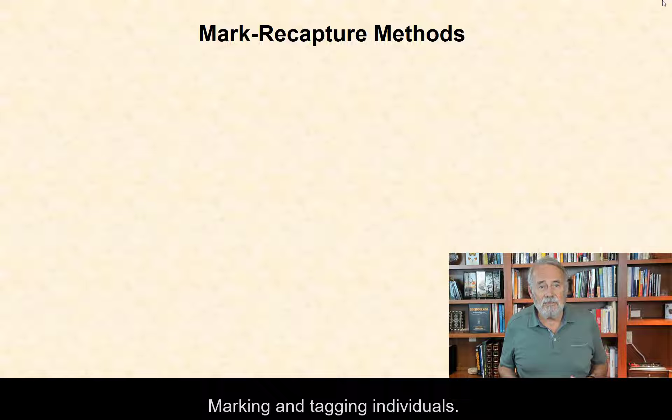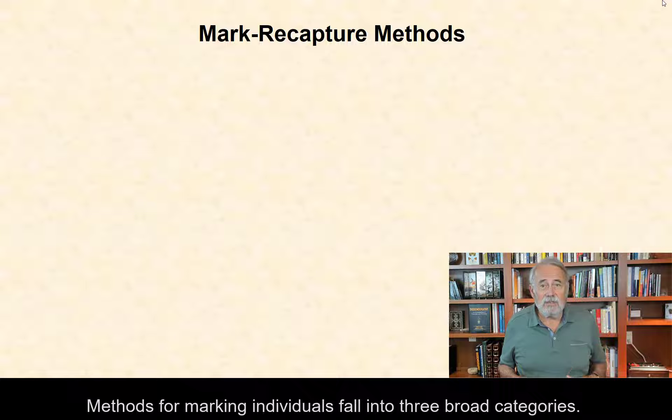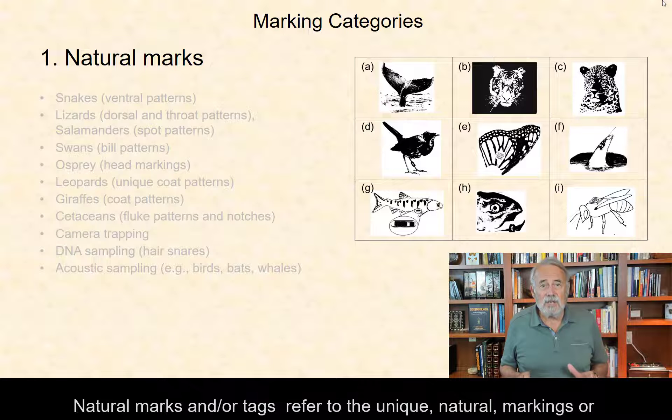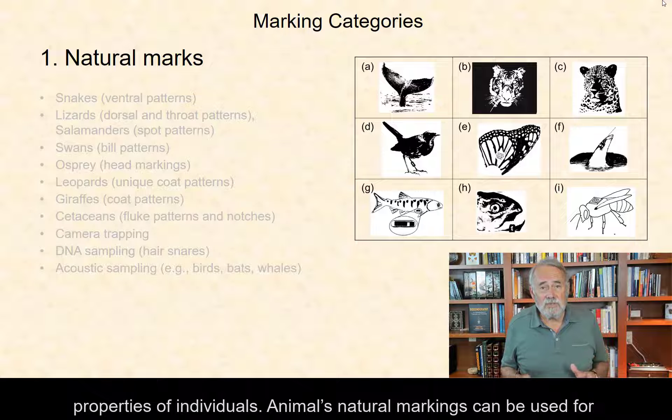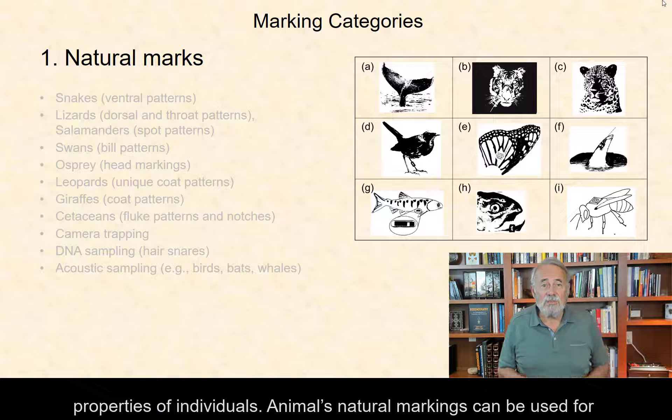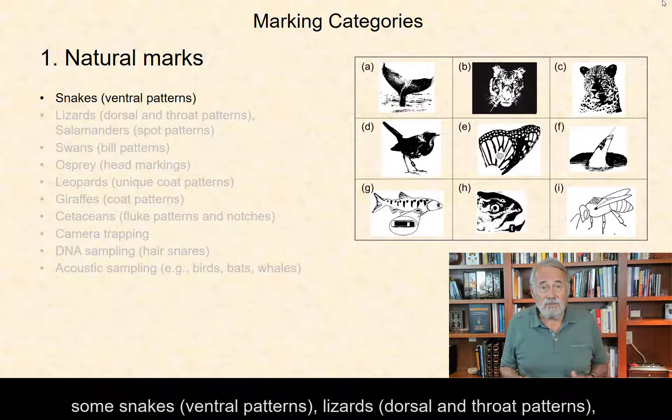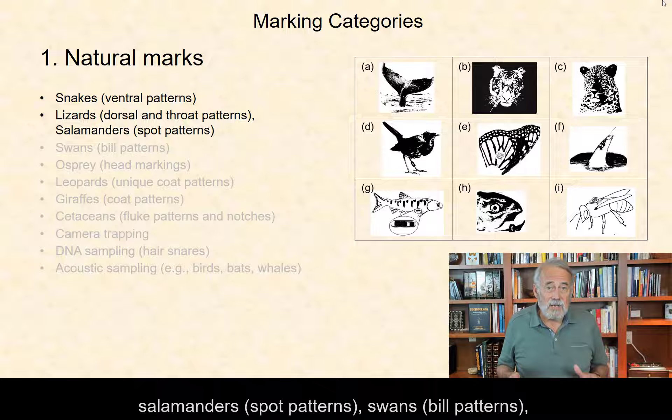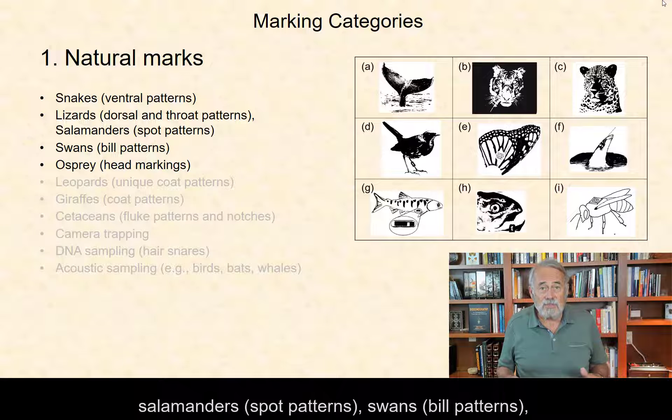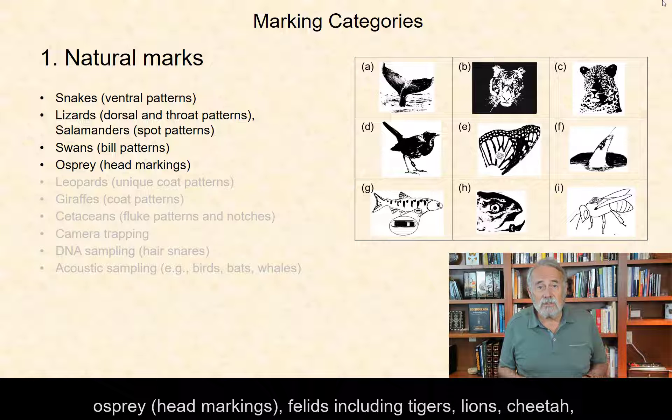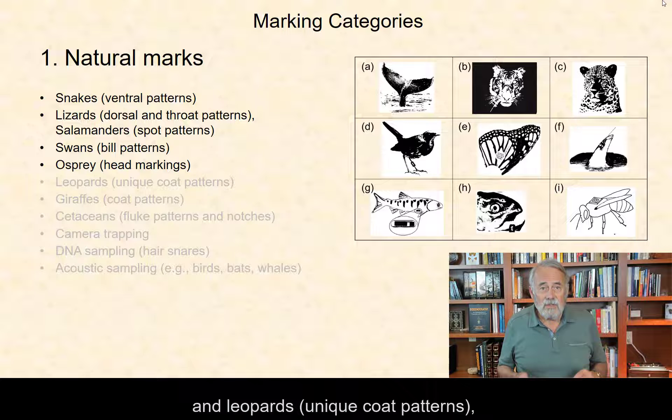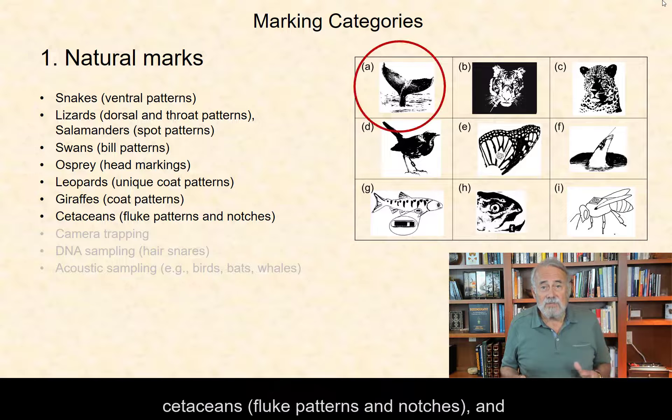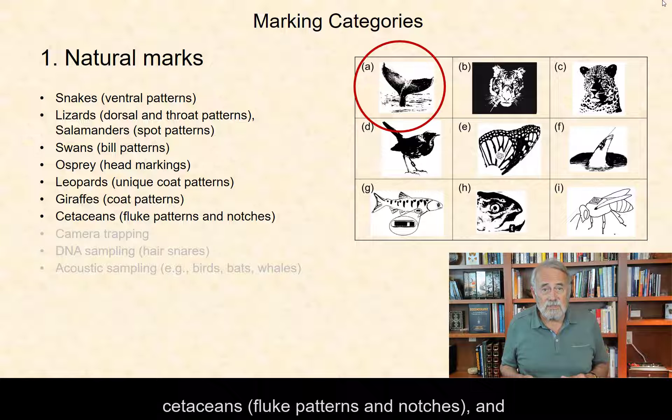Marking and tagging individuals. The methods for marking individuals fall into three broad categories. Natural marks and tags refer to the unique natural markings or properties of individuals. Animals' natural markings can be used for some snakes (ventral patterns), lizards (dorsal and throat patterns), salamanders (spot patterns), swans (bill patterns), osprey (head markings), felids including tigers, lions, cheetahs, and leopards (coat patterns), giraffes (coat patterns), and cetaceans (fluke patterns and notches).